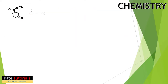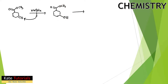NaBH4 reduces only the ketone to a secondary alcohol; the ester remains untouched. In the second step, DIBAL-H is added. DIBAL-H converts the ester to an aldehyde, while the alcohol and other groups remain as they are, because these reagents are chemo-selective.